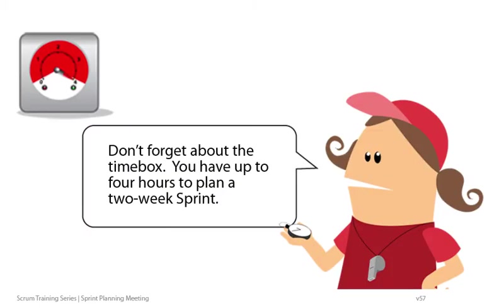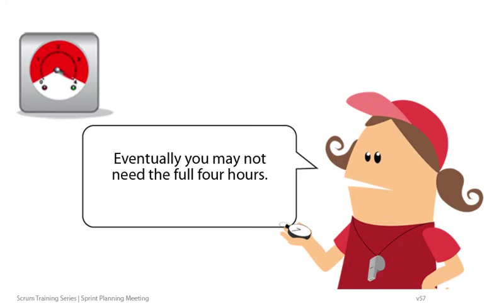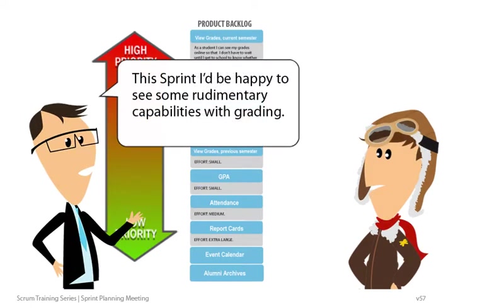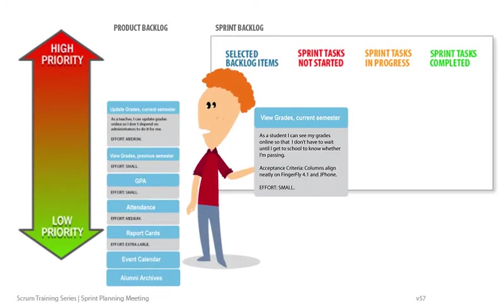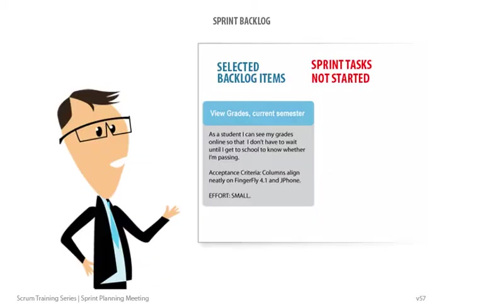Don't forget about the time box. You have up to four hours to plan a two-week Sprint. Eventually, you may not need the full four hours. What are our goals for this Sprint? This Sprint, I'd be happy to see some rudimentary capabilities with grading. This is the Product Owner's top priority item. Do the rest of you think we could do this in our two-week Sprint? As a student, I can see my grades online so that I don't need to wait until I get to school to know whether I'm passing. Columns should align neatly on Fingerfly 4.1 and JFome.